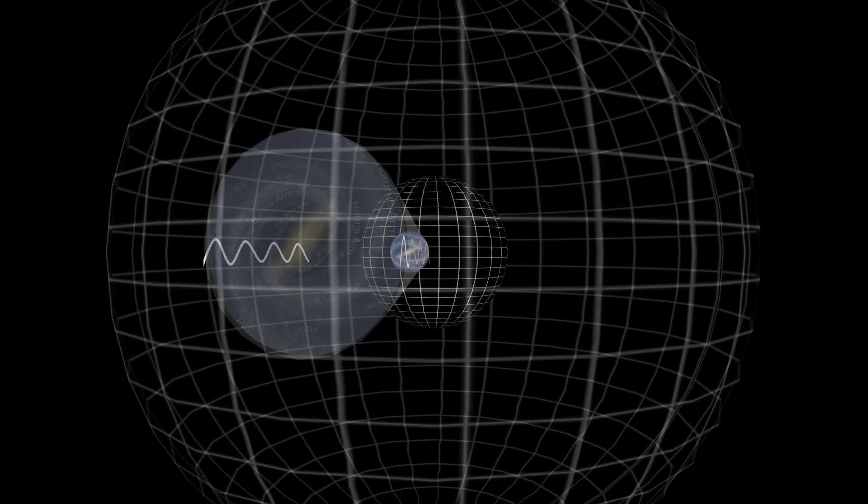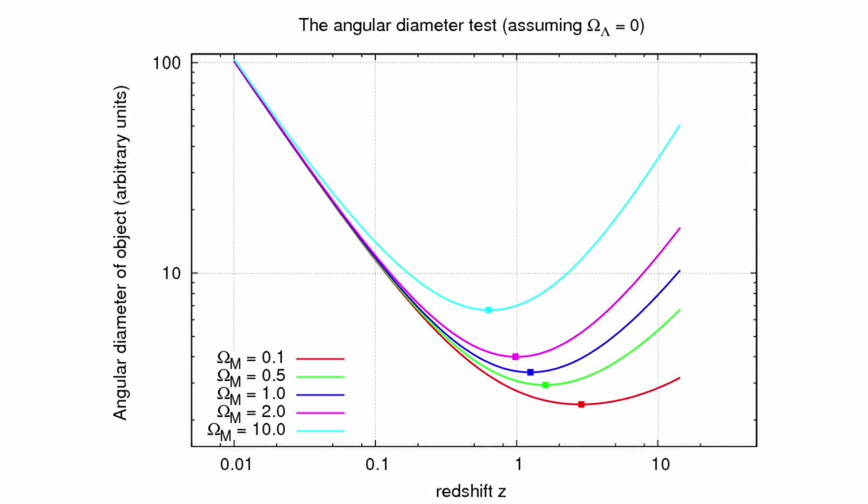But if the universe is expanding, you need to take into account the fact that when the light was originally emitted, the universe was much smaller and hence took up a greater proportion of the universe's scale than the object would now. This means that if the Big Bang is correct, then as we look at older and older galaxies, they should start to appear larger and larger.